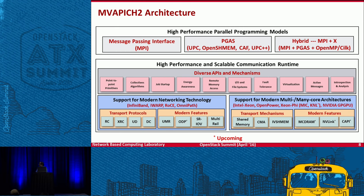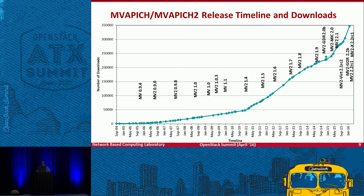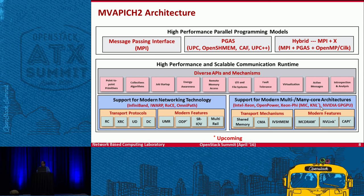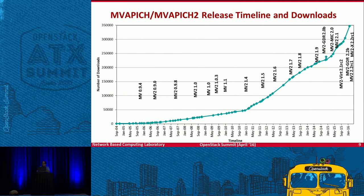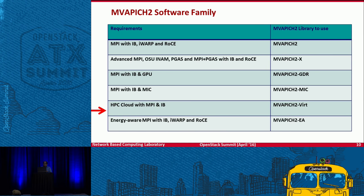This broad chart shows the overview of the MVAPICH2 architecture. We support not only MPI but also PGAS, hybrid MPI plus X. We support different technologies including traditional InfiniBand and the new OmniPath, and all different platforms — Intel, Xeon, OpenPower — and we are working on KNL and NVIDIA GPUs. For this talk today, we will mostly focus on HPC cloud with MPI and InfiniBand, which is the package called MVAPICH2 Virtualization.